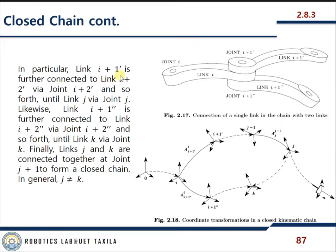Link i+1 dash is further connected to link i+2 dash, and similarly i+1 double dash connects to i+2 double dash and so forth until link j and link k respectively. Links j and k are connected together through joint j+1 to form a closed chain. In general, j is not necessarily equal to k.